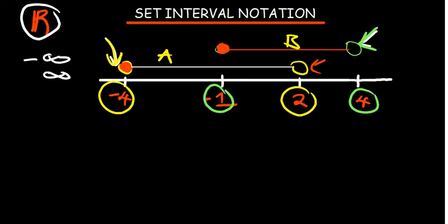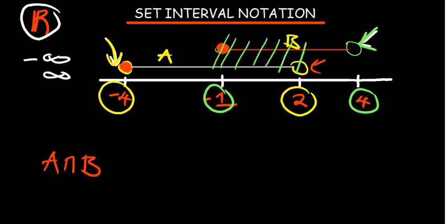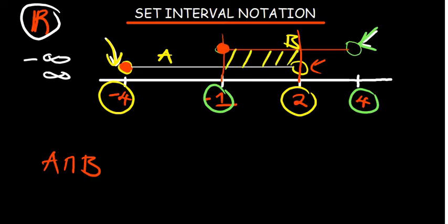Let's find the intersection of A and B. On a number line, even when not drawn for you, I would advise you to draw it yourself. We can find the intersection by drawing the region that overlaps the two sets. The region that is overlapping between the two sets is the region common between A and B. From here up to that point is the only region common between A and B. We are considering the region in between, starting from negative one up to two.